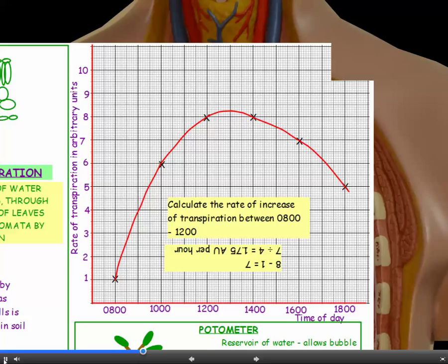So the unit on the y-axis is given in arbitrary units. Now arbitrary just means made up units. It doesn't matter what they are. All it shows you is the increase. So a typical exam question might ask you, calculate the rate of increase of transpiration between 8 o'clock and 12 o'clock. So first of all, work out what the increase is. And then divide that by the number of hours.